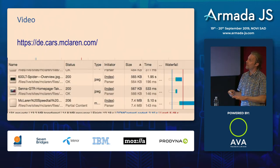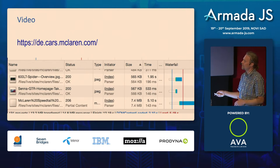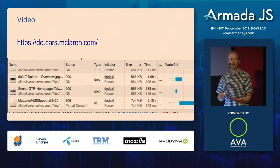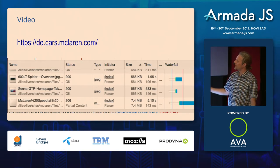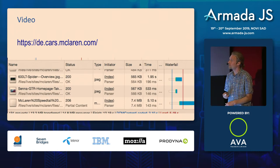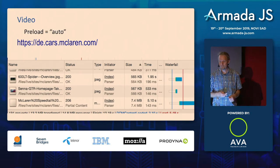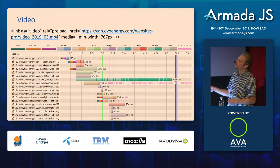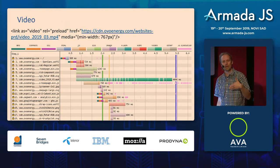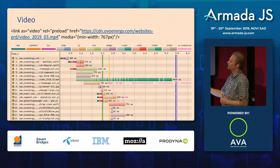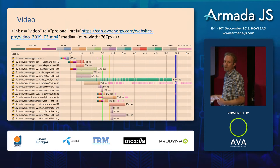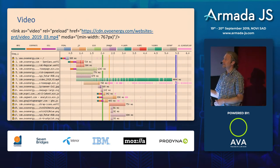The McLaren website was downloading a bunch of videos with preload='auto' that never even appeared on the page — one was 7 megabytes, another 17 megabytes, just crazy amounts of data being wasted. When you use the preload tag you're telling the browser this is the most important file — download it with super high priority — so you can actually see the video downloading before the JavaScript, slowing down the rest of the page. This is definitely an anti-pattern.